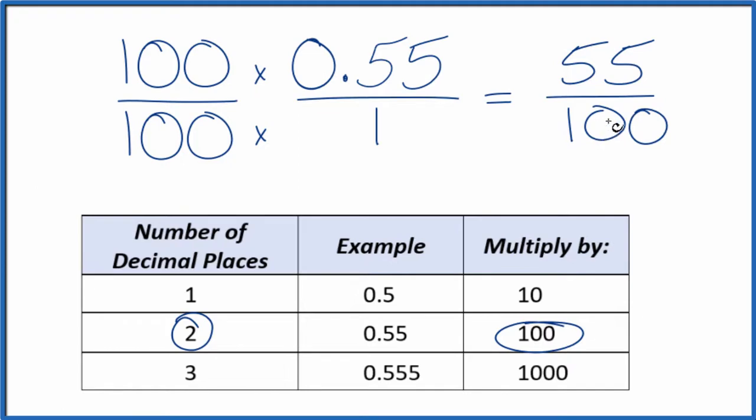And now we have a fraction. 0.55, the decimal, that gives us 55 over 100.